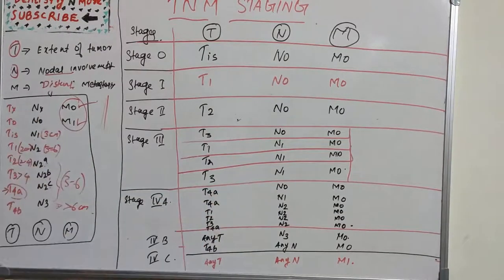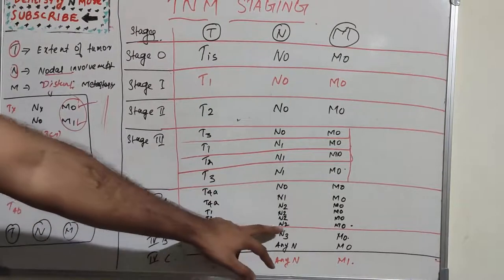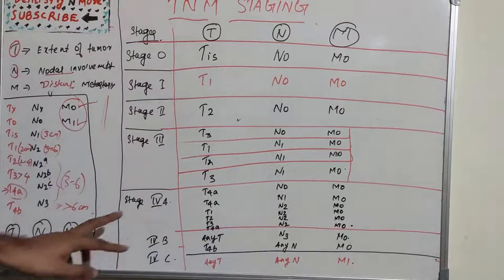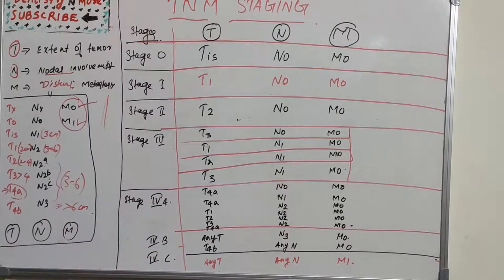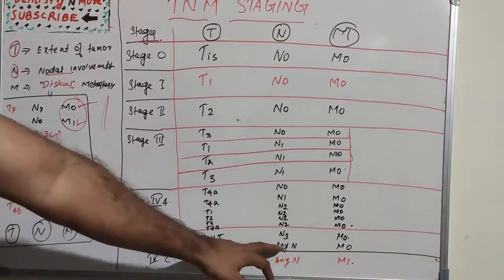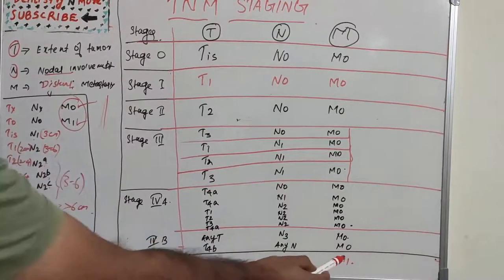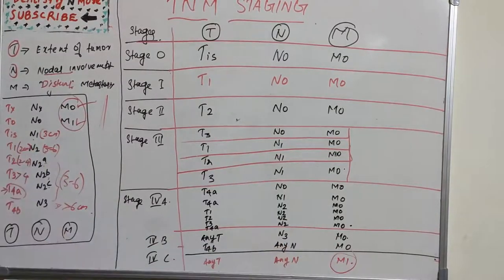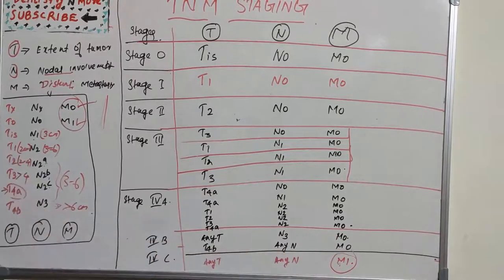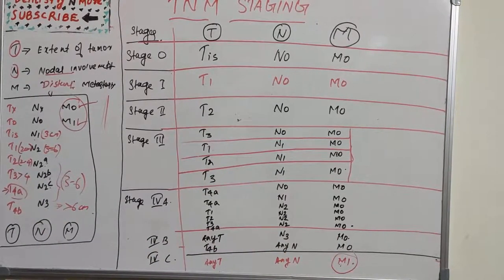Stage 4B is T4B, any N, M0, or any T, N3, M0. Stage 4C, the most advanced, is any T, any N with presence of M1. M1 is distant metastasis, which only appears here.